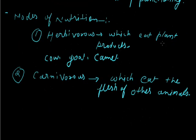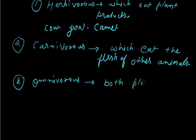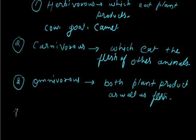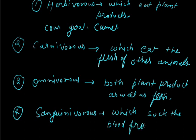Herbivorous and carnivorous are the two major categories. Besides these, animals can also be omnivorous — omnivorous organisms can eat both plant products as well as flesh. Another mode of nutrition is sanguinivorous: these animals suck blood from the host body. Examples include the leech and the mosquito.